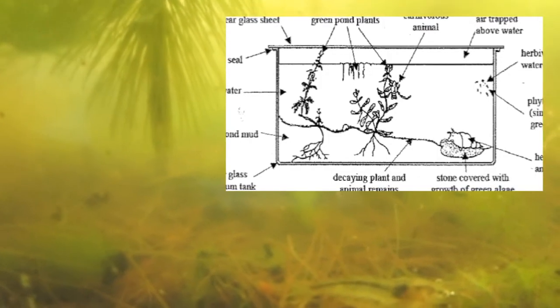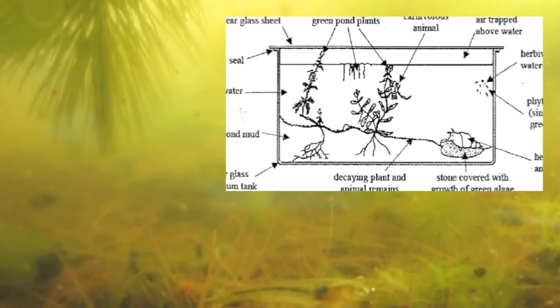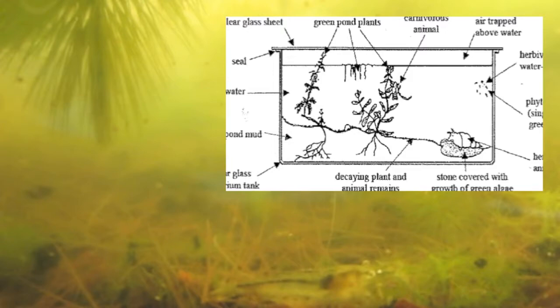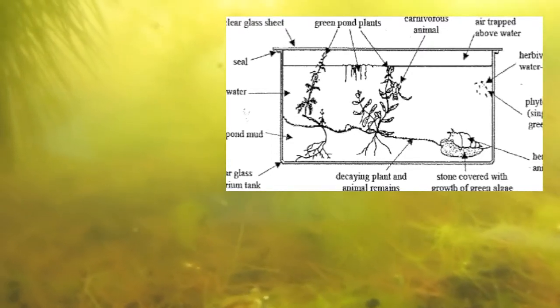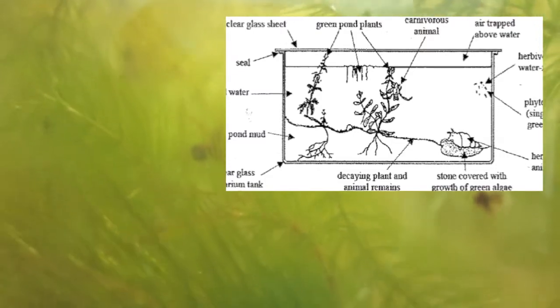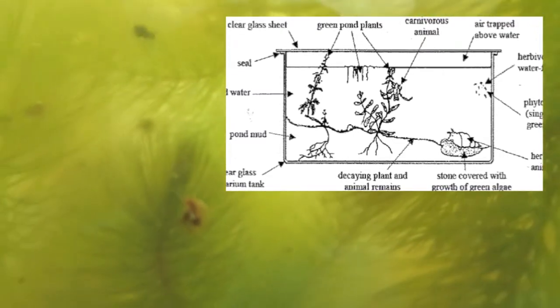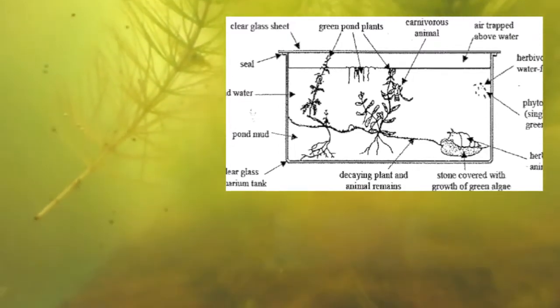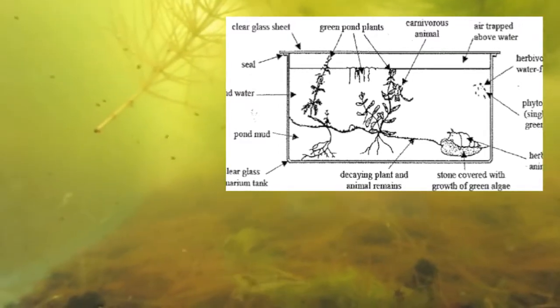This particular model shows a system made up of a range of producers and a few tiny primary consumers, like Daphnia. There are also a few snails, and the shrimp are able to feed both on Daphnia and on the plants.